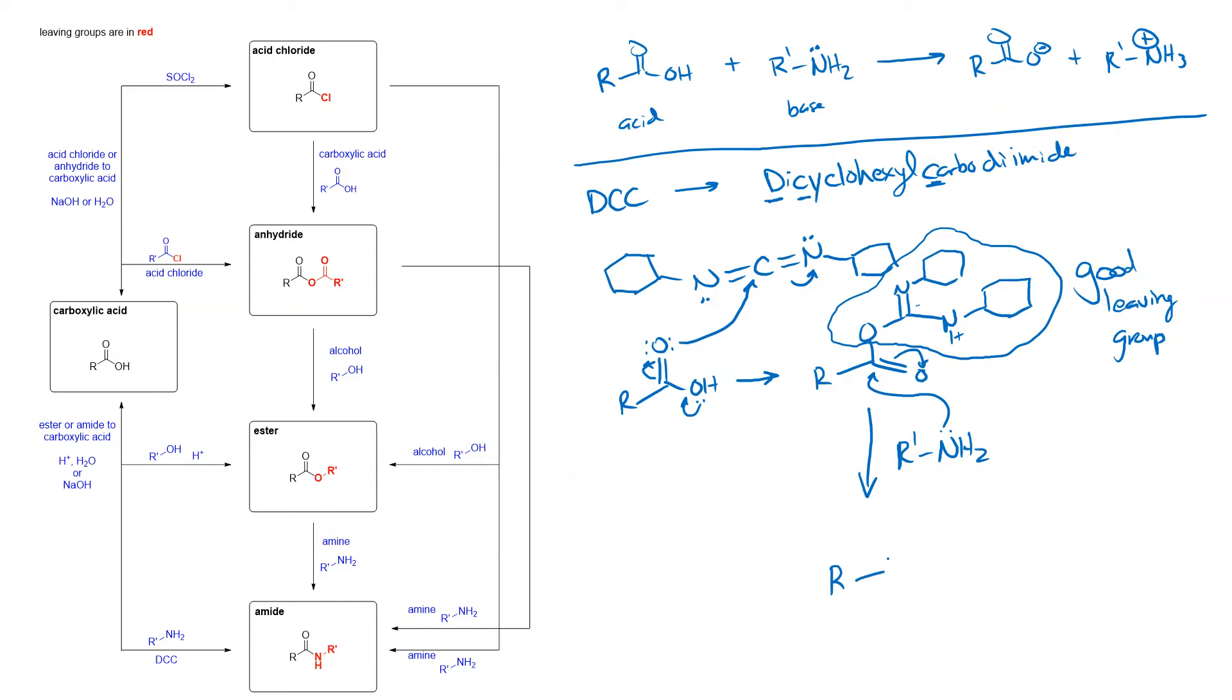And now once we have our leaving group in place. Problem with DCC is it takes forever to draw. Once we have our leaving group in place, when this re-collapses, the best leaving group is going to be this one up here. And so we're going to do this. We're going to have that whole thing leave and we end up with our amide coming out.